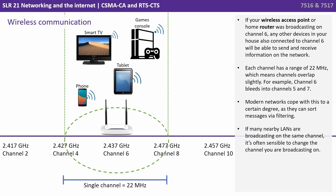Each channel has a range of 22 MHz, which means channels overlap slightly. For example, channel 6 bleeds into channels 5 and 7. Modern networks can cope with this to a certain degree as they can sort messages via filtering. If many nearby LANs are broadcasting on the same channel, it's often sensible to change the channel you're broadcasting on.